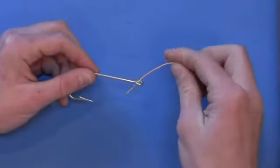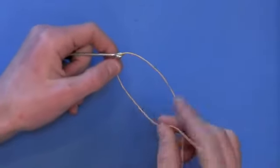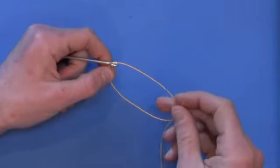I like to start by threading my line down through the top of the eyelet. We're going to start out by just making a simple overhand knot in our tippet.